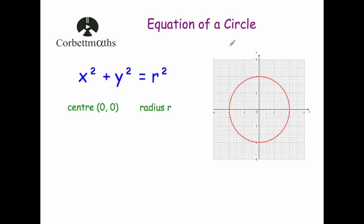In this video we're going to look at the equation of a circle. This video is focused for GCSE students because the circles we're going to be talking about always have their center at the origin, the point (0, 0). At GCSE level, those are the only circles you need to know the equation of. The equation of a circle with center at the origin is x² + y² equals whatever the radius is squared.